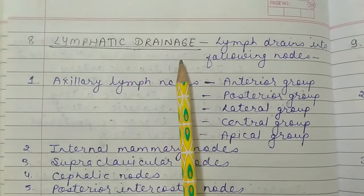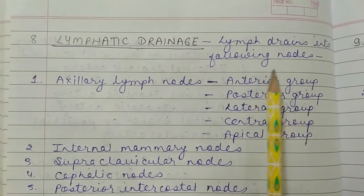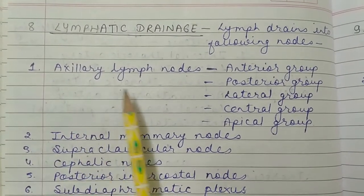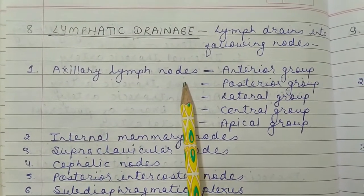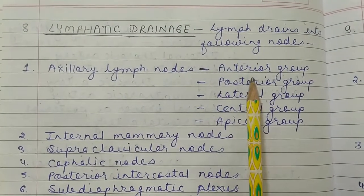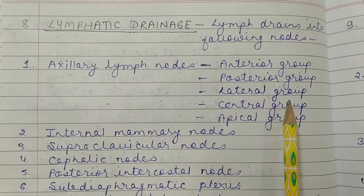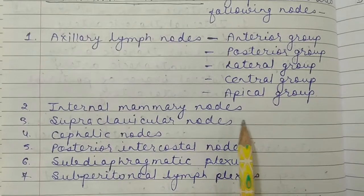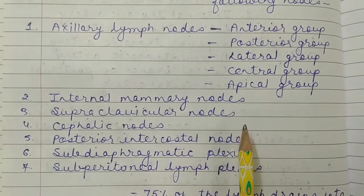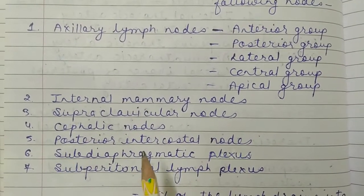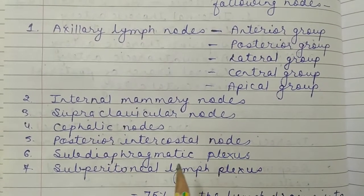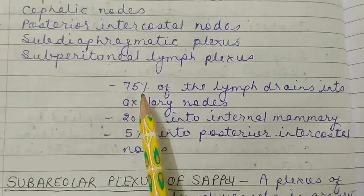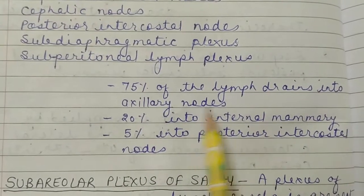The eighth point is the lymphatic drainage of the mammary gland. Lymph drains into the following nodes: first, axillary lymph nodes — anterior, posterior, lateral, central, and apical groups; second, internal mammary nodes; third, supraclavicular nodes; fourth, cephalic nodes; fifth, posterior intercostal nodes; sixth, subdiaphragmatic plexus; and seventh, subperitoneal lymph plexus. 75% of lymph drains into axillary nodes.